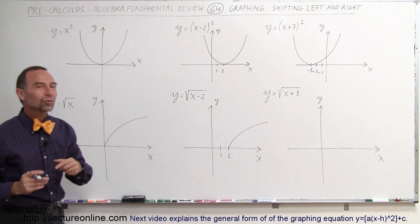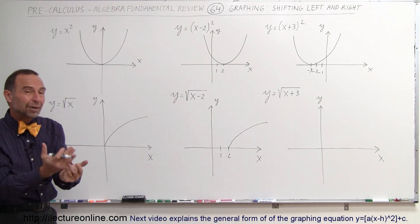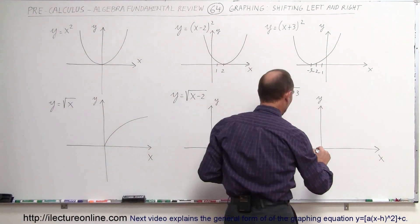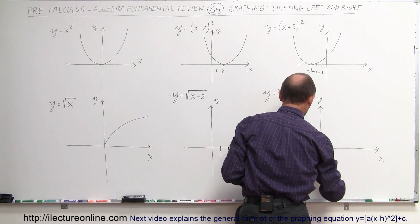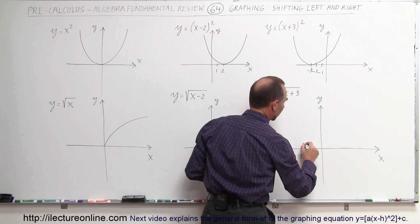And if we write y equals the square root of x plus 3, that means it's going to be shifted to the left three units. So minus 1, minus 2, minus 3, like that. And then the graph will look like this.